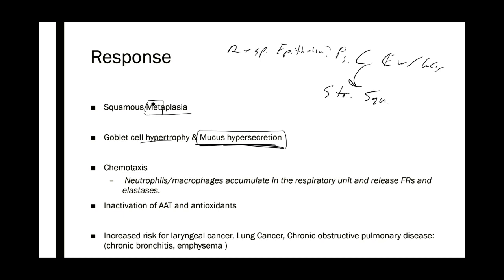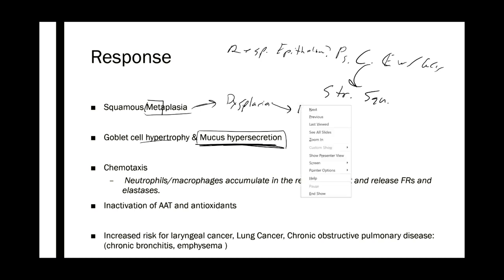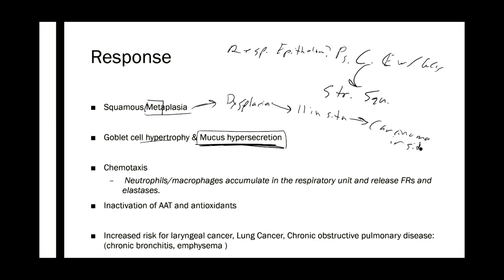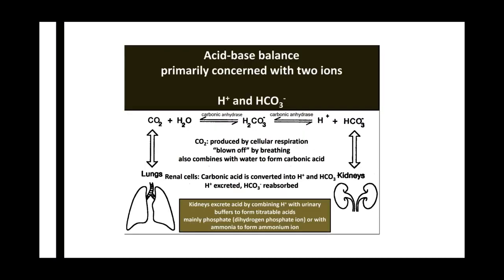Going back to metaplasia — the reason this is so bad is something called the carcinoma sequence. Metaplasia can lead to dysplasia, which is disordered growth where cells start to go rogue. That can lead to carcinoma in situ — in place — and then to invasive carcinoma, at which point we have cancer, and eventually that can lead to metastatic disease.